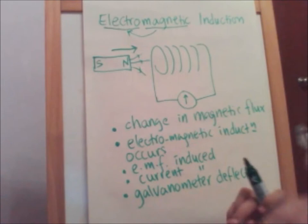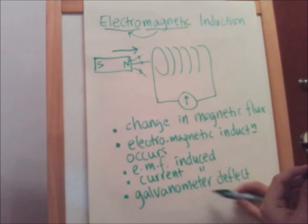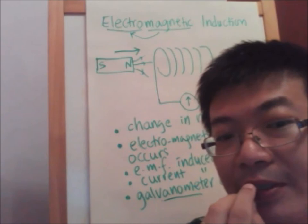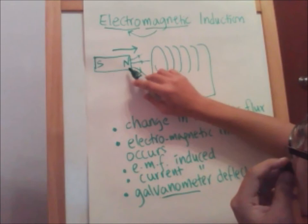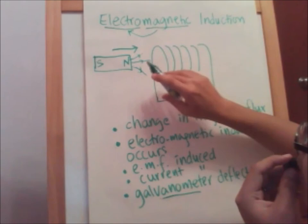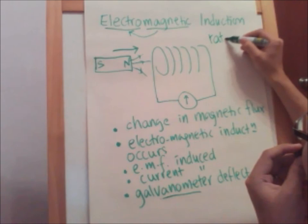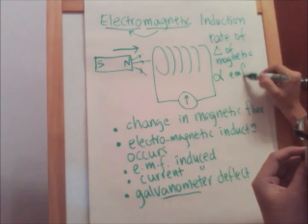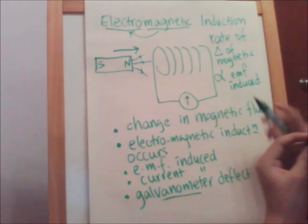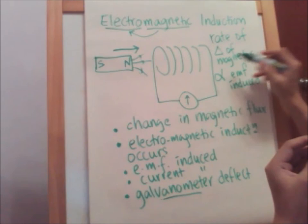If we want a larger deflection — a bigger induced current — what can we do? We can push in the magnet faster, or use a stronger magnet, or have more turns in the coil. This is due to Faraday's Law: the higher the rate of change of magnetic flux, the higher the induced EMF and current.